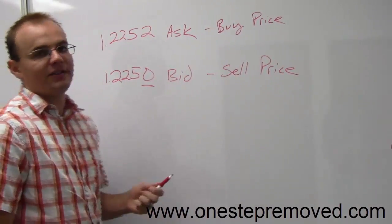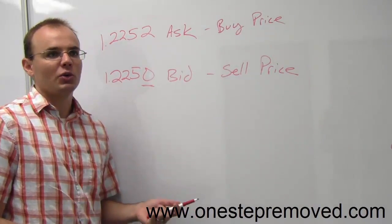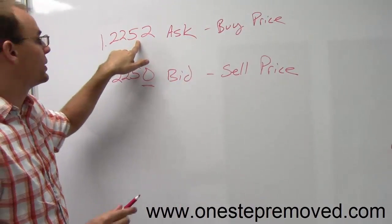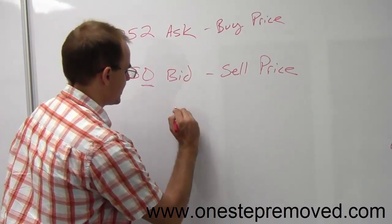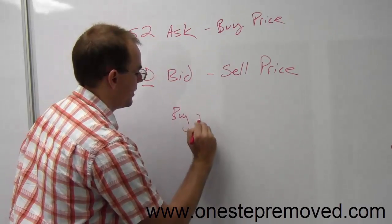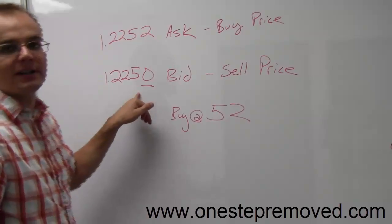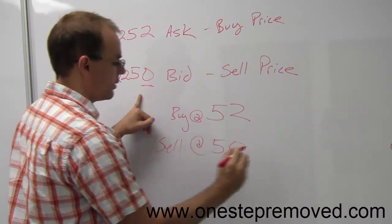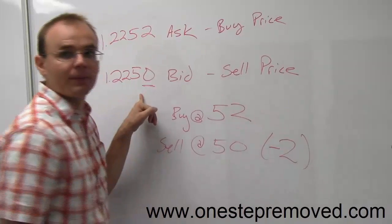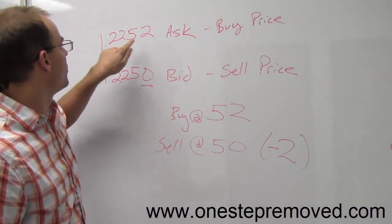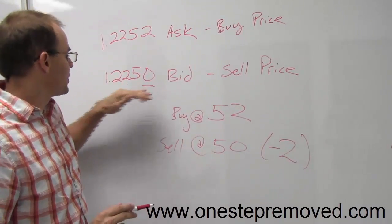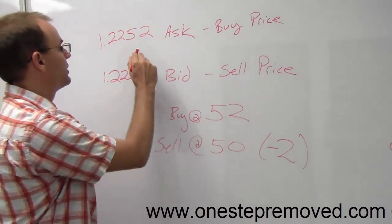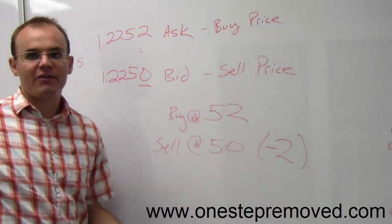When you enter a transaction, people often get confused about the spread and how often you have to pay it. It's only on entry. When you go into the market and you buy for 122.52, if I wanted to sell immediately, then I can only sell at 50, which is negative 2. But very importantly, you only pay the spread once. If I buy at 52, I'm stuck on this price forever. So whether the spread changes from 2 pips to 5 pips does not affect my profitability at all.